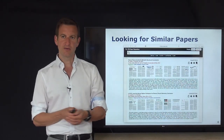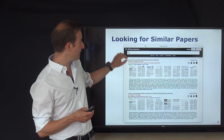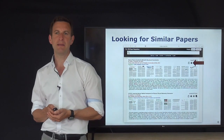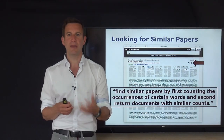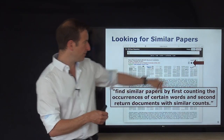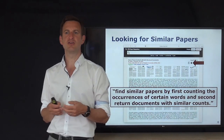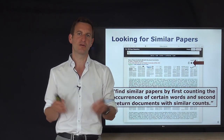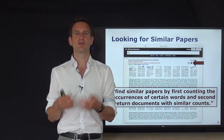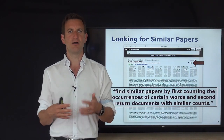If documents have certain words appearing with similar frequencies, those documents are probably similar. Bag of visual words takes that concept and transfers it from text documents to images. For example, in a paper repository, there's a button 'look for similar papers.' The database returns papers similar to a given one by checking how often individual words occur in all documents, building a distribution of word occurrences and returning the most similar papers. That's the basic idea of the bag of words approach.